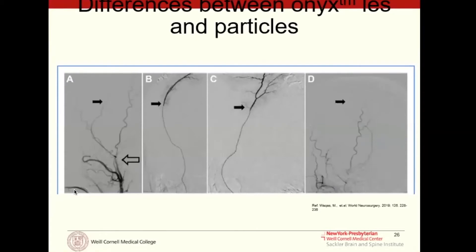Onyx is a liquid embolic agent that we use for AVMs and AV fistulas for embolization. What's nice about Onyx as opposed to particles is that it's a more robust permanent embolic material — it doesn't resorb over time the way particles do. In addition, you can push Onyx very distally.